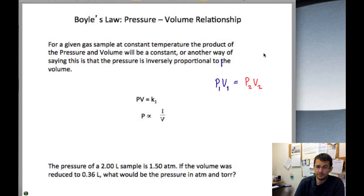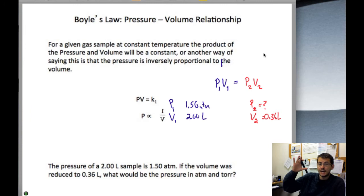You've got a 2-liter sample at 1.5 atmospheres. If you suddenly reduce the volume to 0.36 liters, what would be the pressure in atmospheres and in Torr? Well, again, we start listing out our quantities. The initial pressure is shown as 1.5 atmospheres. The initial volume was 2.00 liters. And the final pressure is what we're looking for and our volume is given as 0.36 liters. You compress the gas. We would expect the pressure to go up.